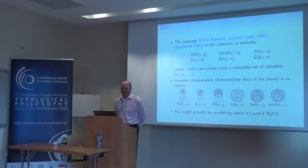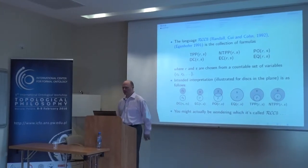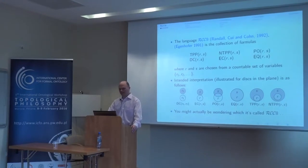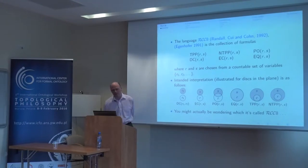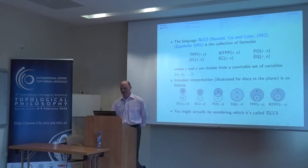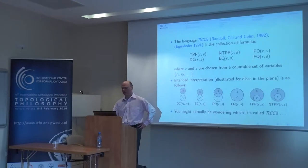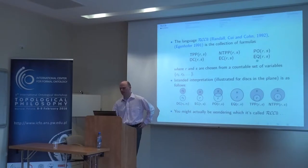The language RCC8, or the region connection calculus 8, was proposed by Randall, Suey, and Cohn from the University of Leeds in 1992. Max Egenhofer had an essentially equivalent formulation. It's a language in which there are six primitive predicates: tangential proper part, non-tangential proper part, partial overlap, disconnection, external connection, and equality.